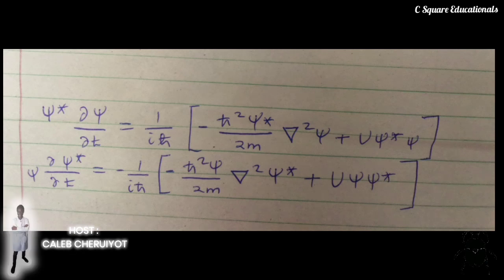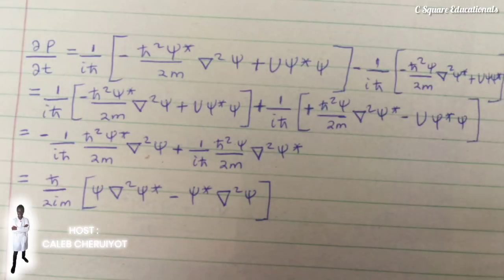Substituting into the time-derivative of rho, we obtain this set of equations. The population operators and the del-squared term in the above result suggest that the right-hand side is the divergence of J. The lowest-order terms imply that this is the negative of J altogether.